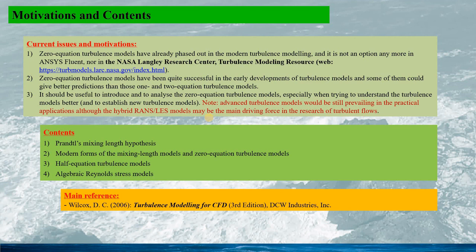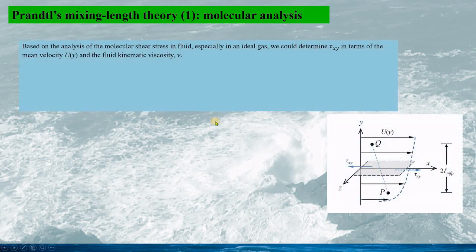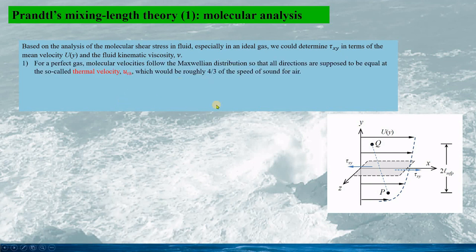Based on the analysis of the molecular shear stress in fluid, especially in an ideal gas, we could determine tau_xy in terms of the mean velocity u(y) and the fluid kinematic viscosity nu, based on the following assumptions. For a perfect gas, molecular velocity follows the Maxwellian distribution so that all directions are supposed to be equal at the so-called thermal velocity u_th, which would be roughly four-thirds of the speed of sound for air.